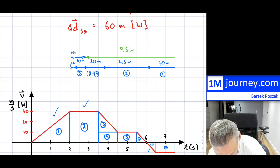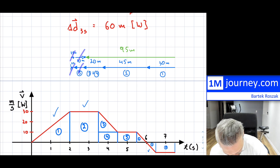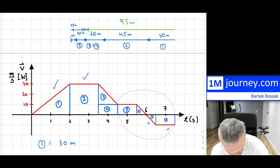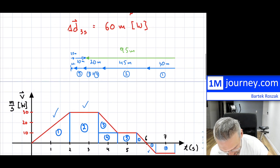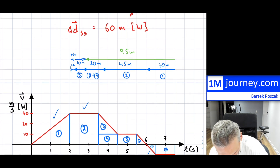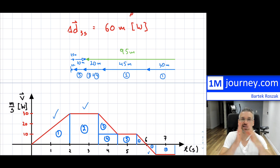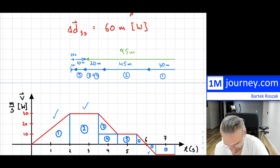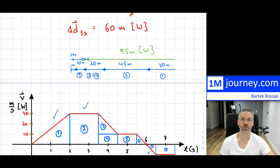All of those cancel out — this cancels with this, this cancels with this. Those pieces involved movement, slowdowns, and speeding back up, but they got us back to the same point. So in terms of displacement, the total is 95 meters west.